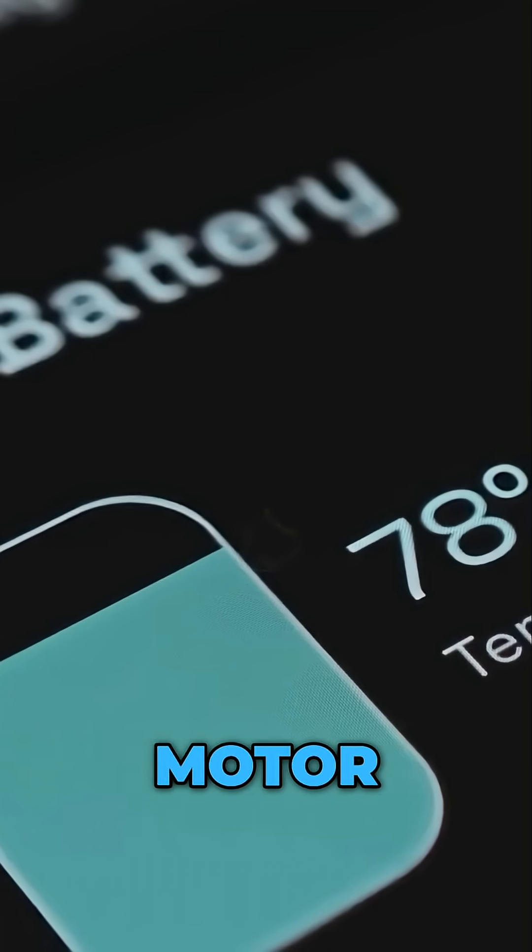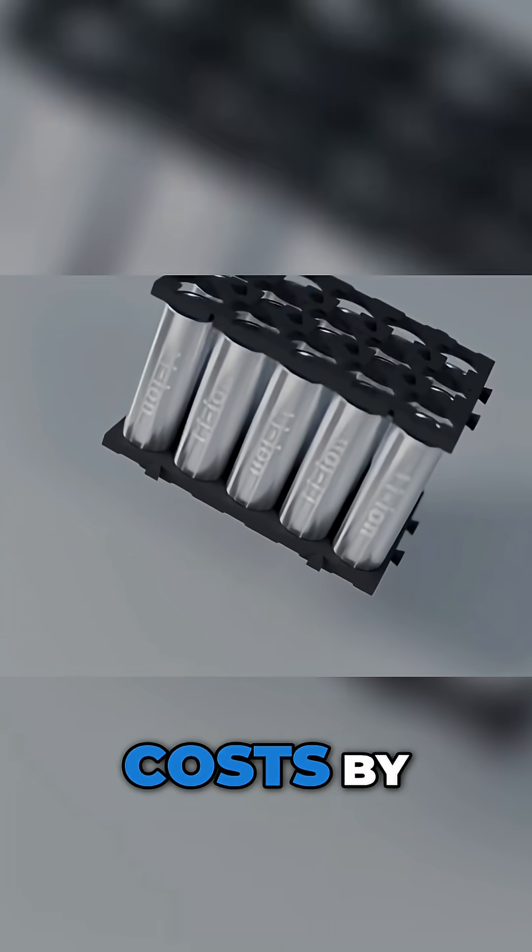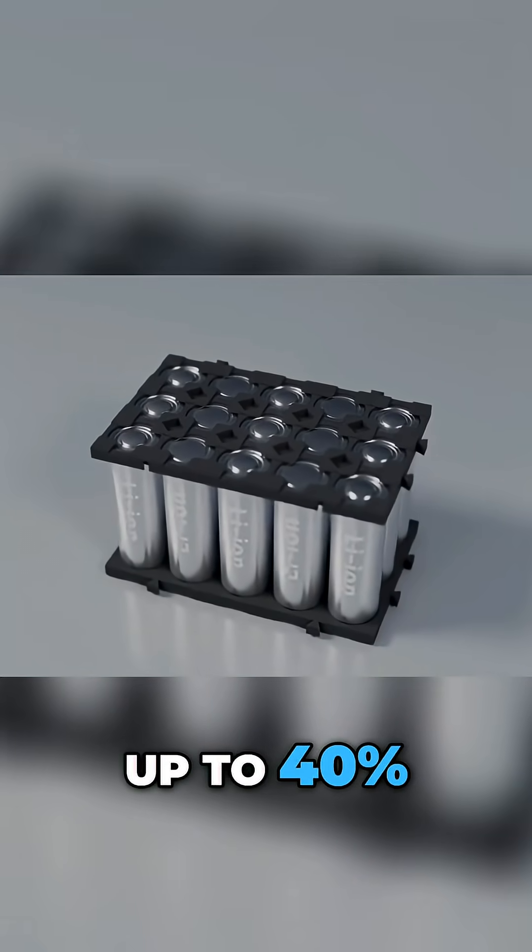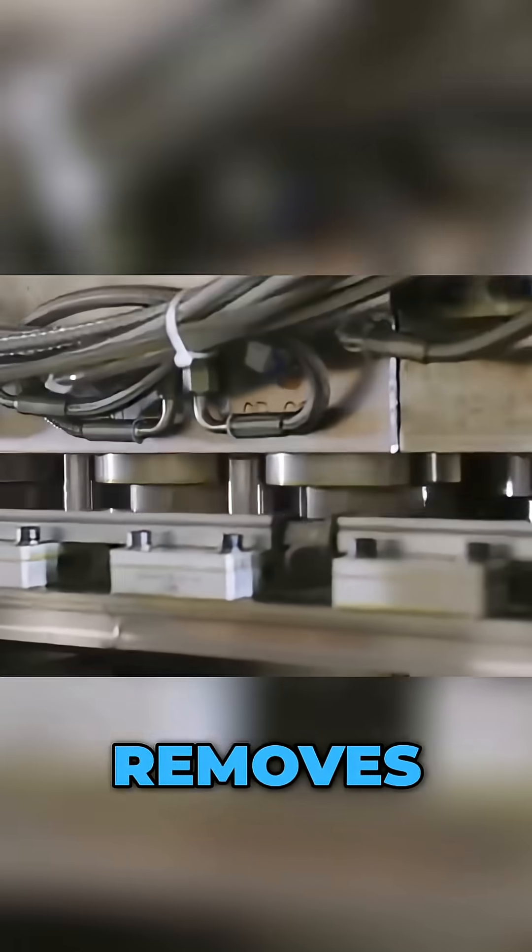This alone eliminates a second motor, inverter, and complex wiring systems, cutting drivetrain costs by up to 40%. Tesla's skateboard-style platform with a structural battery removes traditional frame components like rails